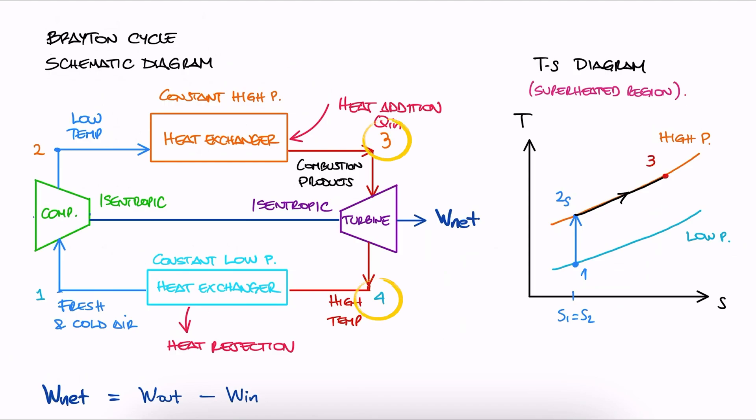Then from 3 to 4, we go isentropically to the lower pressure, so 4s instead of just 4. And from 4 to 1, we reject heat at the heat exchanger.